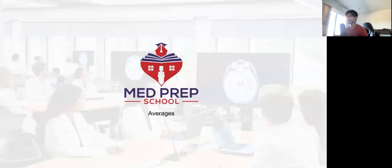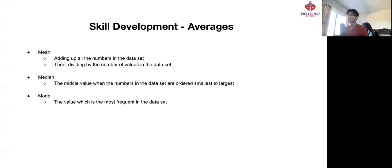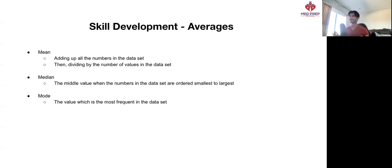Welcome back champions. Today we're just going to be going through a short class on averages. There are three types of averages that we need to be familiar with for the QR. The first is the mean average, which is adding up all the numbers in the data set and then dividing by the total number of values that you have. This is probably the average that a lot of us are familiar with. When the question doesn't specify what average it wants you to calculate, they're alluding to the mean average.